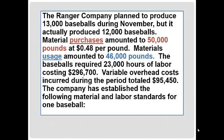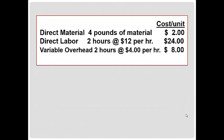Material purchases amounted to 50,000 pounds at 48 cents per pound. Materials usage amounted to 46,000 pounds. The baseballs required 23,000 hours of labor costing $296,700. Variable overhead costs incurred during the period totaled $95,450. The company has established the following standards for one baseball: direct material, 4 pounds at $2 per unit; direct labor, 2 hours at $12 per hour or $24 per unit; variable overhead, 2 hours at $4 per hour or $8 per unit. So clearly they apply overhead based on direct labor hours.